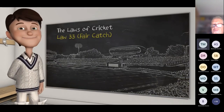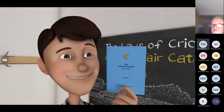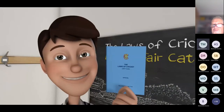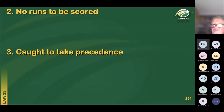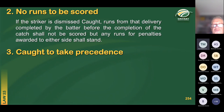To catch up on everything to do with catching, refer to Law 33 in the Blue Book. When a batter is out caught, the runs from that delivery completed by the batters before the completion of the catch shall not be scored, but any runs for penalties awarded to either side shall stand. The answer for runs scored when out caught is nil.